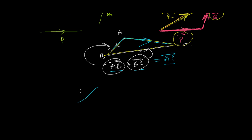Similarly, if I have this triangle and I give directions to two sides in the same order, the resultant's direction is the third side in the opposite order. These two are in same order, and the third one should be in reverse order. That's it.